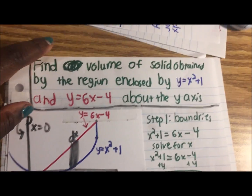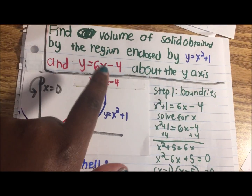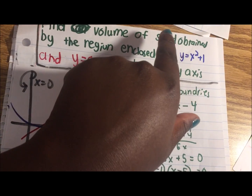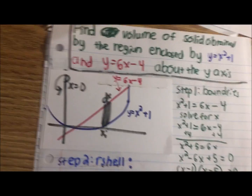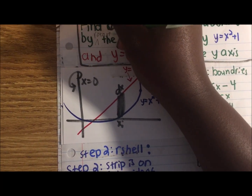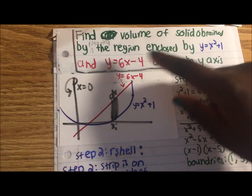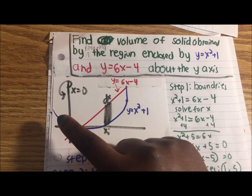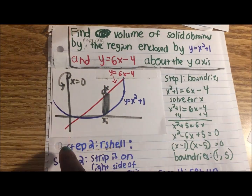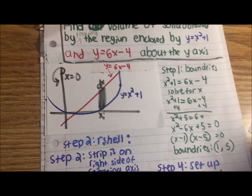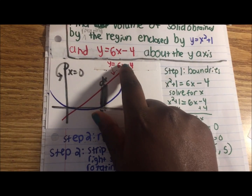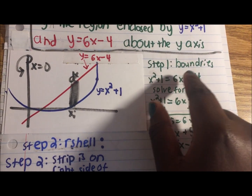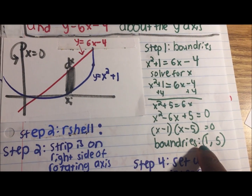Let's do a practice problem. Find the volume of the solid obtained by rotating the region enclosed by y equals x² + 1 and y equals 6x − 4 about the y-axis. The strip is parallel to the rotating axis, which is why we're using the shell method. Step one is the boundaries: set the two equations equal to each other and solve for x. When you put x² + 1 equal to 6x − 4 and solve for x, you get 1 and 5 as the boundaries.